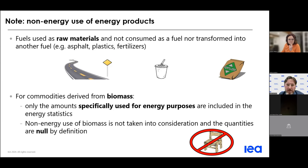It is important to note that non-energy use generally refers to fossil fuels only. By convention, energy statistics does not include the production of waste, wood, or biomass not used for energy purposes — for instance, wood used in construction or furniture manufacture is not included in production, so likewise it should not be included in non-energy demand.